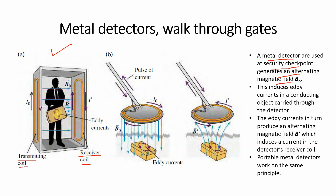اگر کوئی شخص اس میں enter ہوتا ہے اور اس کے پاس کوئی metal کی چیز ہوتی ہے تو یہ metal object magnetic field کو 90 degree پہ traverse کرے گا۔ اس metal میں free electrons ہوں گے — جب یہ charge particles magnetic field کے perpendicular move کریں گے تو ان پر ایک force لگتی ہے: F = qv × B۔ اس force کی وجہ سے metal object کے اندر eddy current produce ہو جائے گا۔ This induces eddy current in the conducting object carried through the detector۔